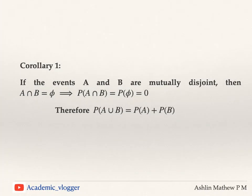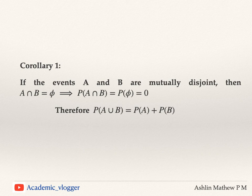As a corollary to the addition theorem for two events: if events A and B are mutually disjoint or mutually exclusive, then A intersection B is the empty set and probability of A intersection B equals zero. Therefore probability of A union B equals probability of A plus probability of B, which is the third axiom of the axiomatic definition of probability — the axiom of additivity for disjoint events.